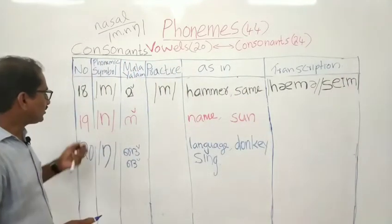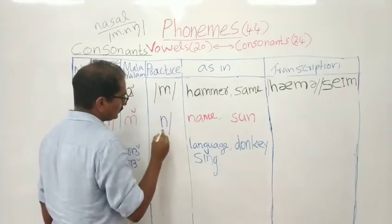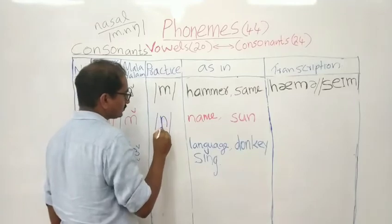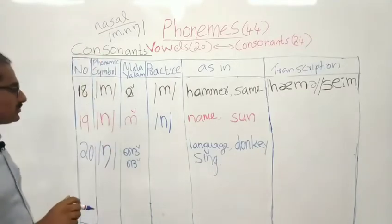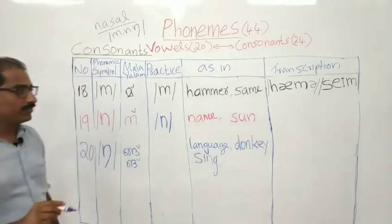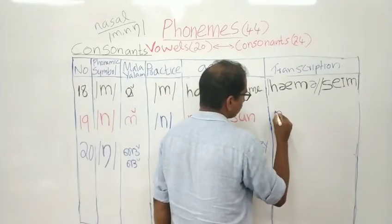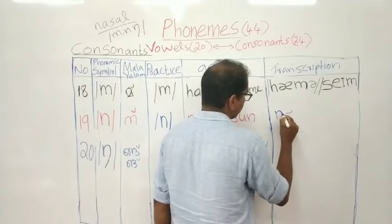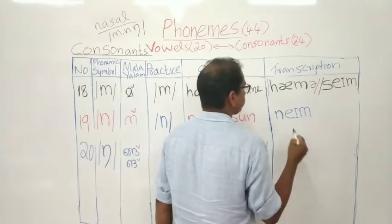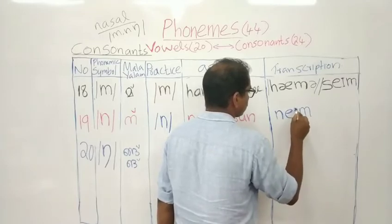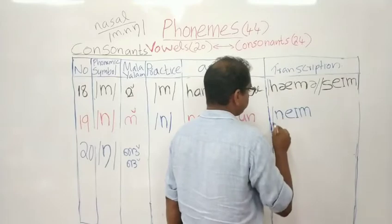The 19th consonant is N. This is small letter N. Only three consonants are in the nasal sound group. N, as in 'name', as in 'son'. Look at here — N.